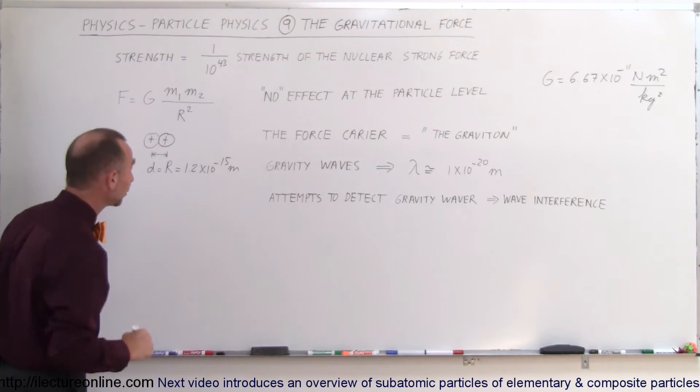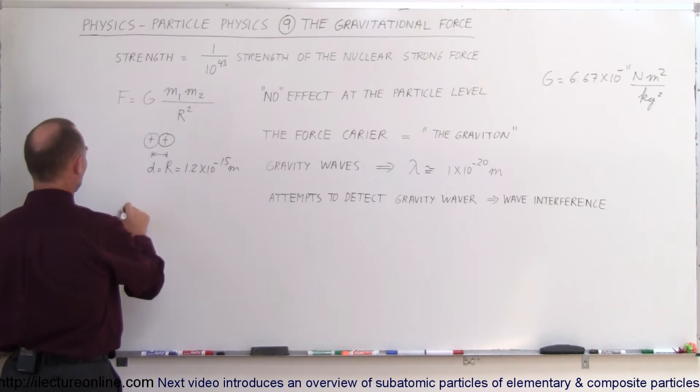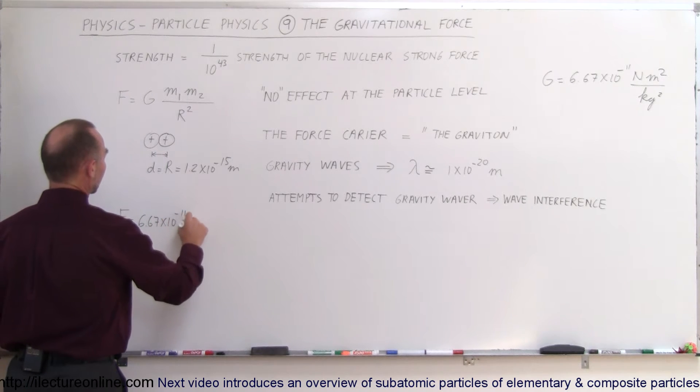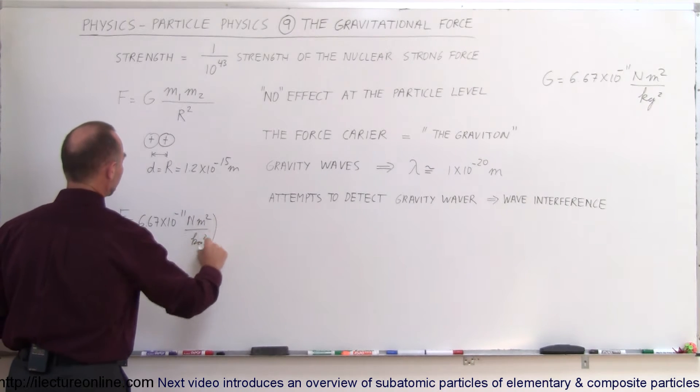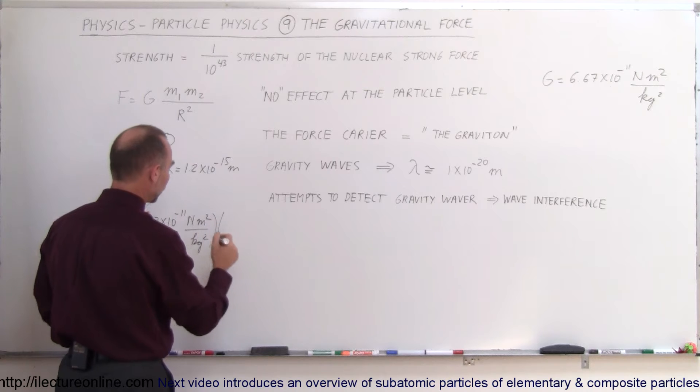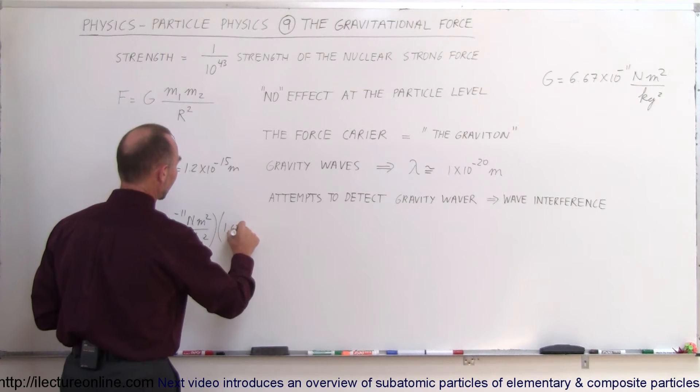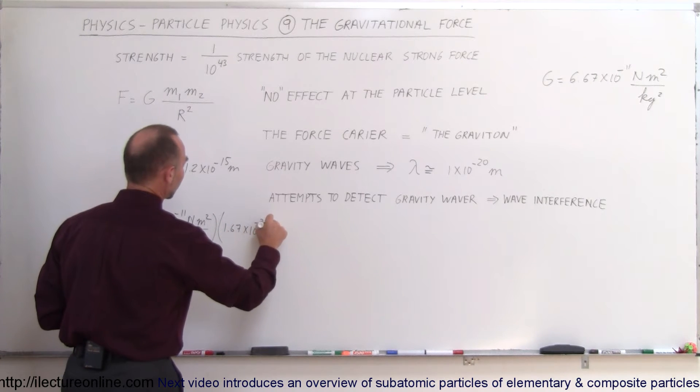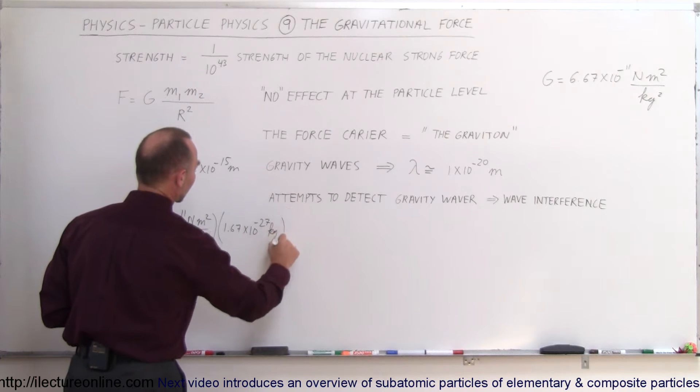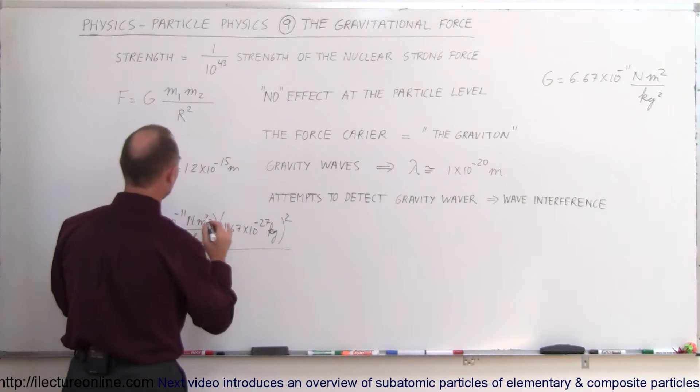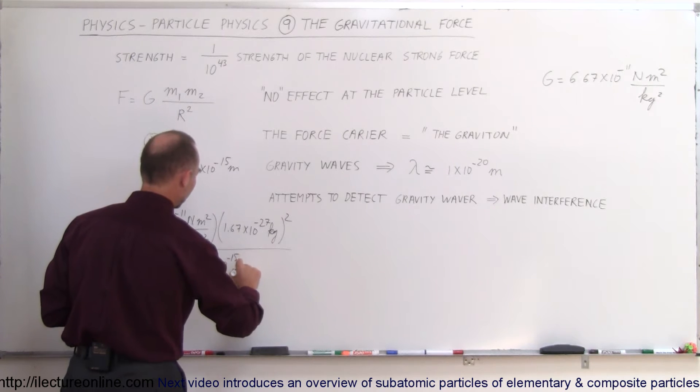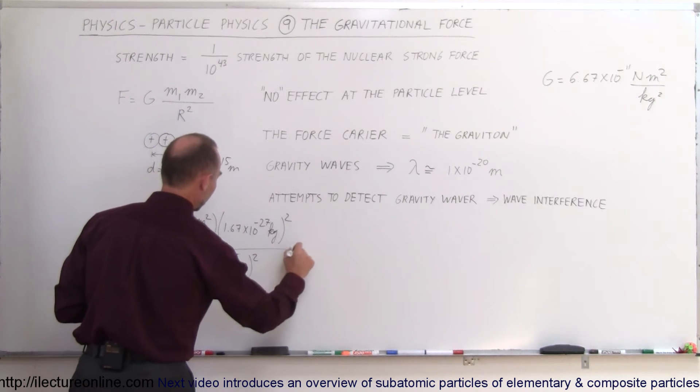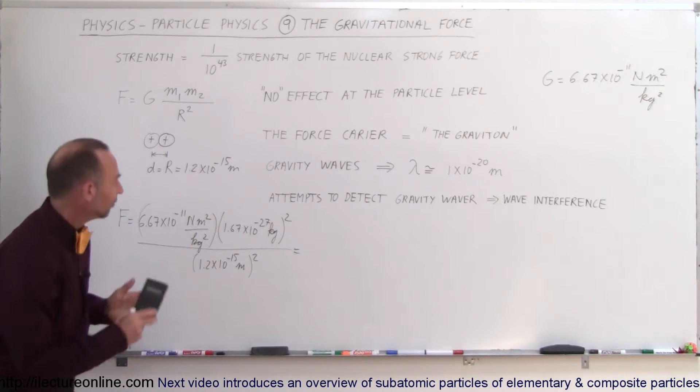Let's go ahead and put in all the other numbers and see what we get. So the force would be equal to 6.67 times 10 to the minus 11 newton meters squared per kilogram squared, multiply times the mass of the two protons, that would be 1.67 times 10 to the minus 27 kilograms. And we can square that because there's two of them, divided by the distance between them squared, 1.2 times 10 to the minus 15 meters, and we have to square that.